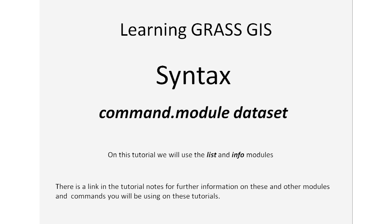We're also going to work on the syntax. For this tutorial we're going to use the command dot plus the module and the data set or file that we want acted upon. We're going to be using the list and info modules, which are pretty much self-explanatory. List will list particular information about our data set or file, and info will give us other information not readily visible from that same data set or file. There will be a link in the tutorial notes for you to get information on these and other commands.